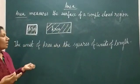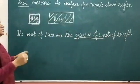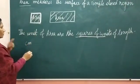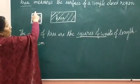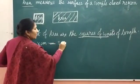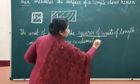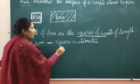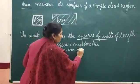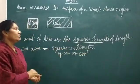Now we talk about the units of area. Units of area are the squares of units of length. For example, centimeter multiplied by centimeter. Because all areas have length and length. So centimeter multiplied by centimeter is square centimeter. In short form, we can write this as cm² or centimeter square. This is how we write the units of area.